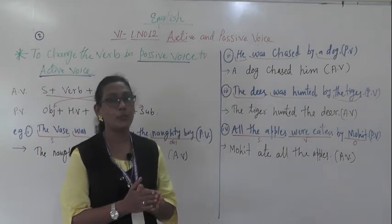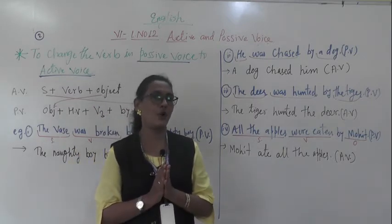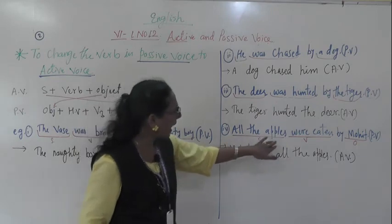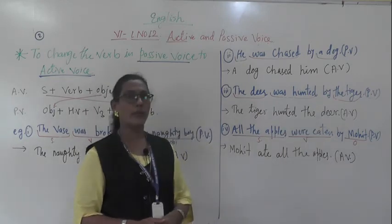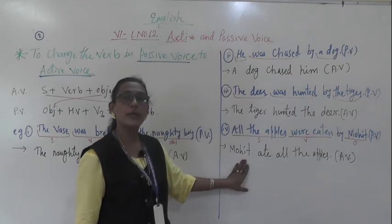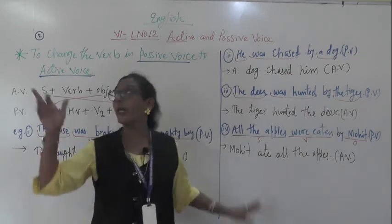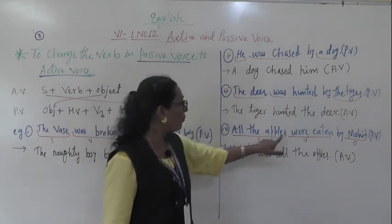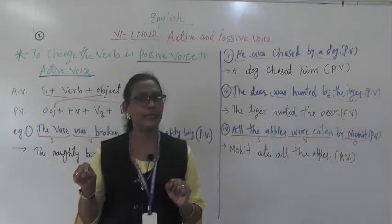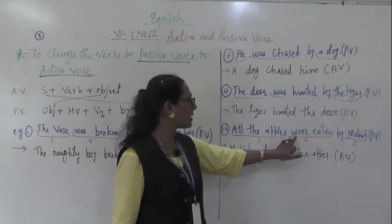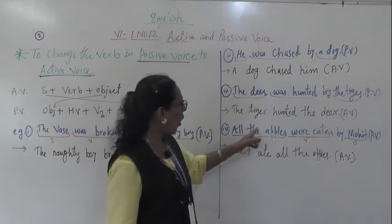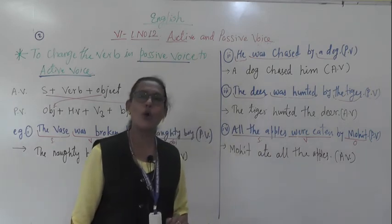Last example: 'All the apples were eaten by Mohit.' Subject = 'Mohit.' 'Were' = past tense. Verb: eat → ate → eaten. V3 is 'eaten,' but since past tense, we take V2 = 'ate.' Object = 'all the apples.' Active voice: 'Mohit ate all the apples.' Whenever past tense helping verb is there in passive, take V2 form for active.